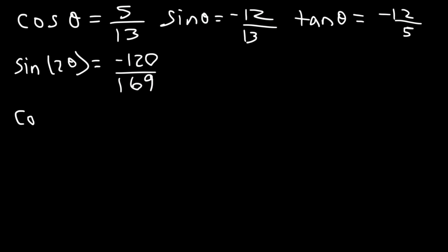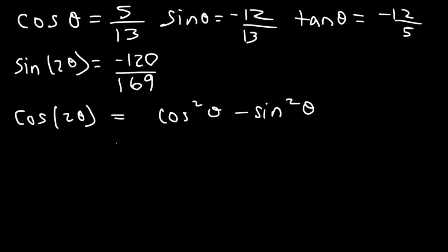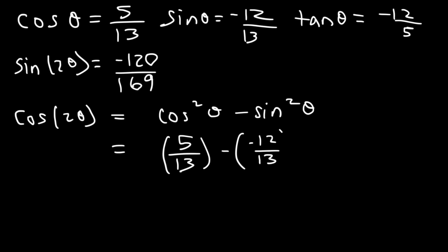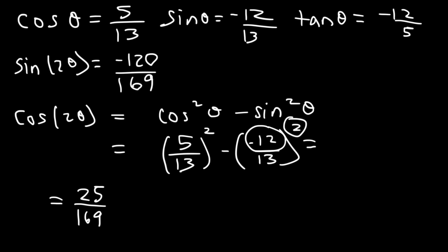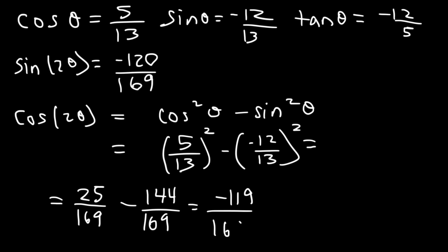Now let's work on cosine 2θ using cosine² θ − sine² θ. Cosine is 5/13 and sine is −12/13. So (5/13)² − (−12/13)²: 5² = 25, 13² = 169, and (−12)² = 144. So we get 25/169 − 144/169. Subtracting 25 − 144 gives −119. So cosine 2θ = −119/169.